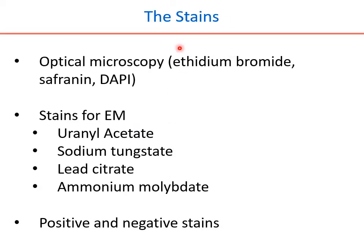Stains have two options: for optical microscopy and electron microscopy. Starting with optical microscopy, shown here are some stains — ethidium bromide, safranine, and DAPI. Ethidium bromide is known for interacting with nucleic acids. Safranine binds to the nucleus in a cell, and DAPI also binds to nucleic acid. These three stains are specifically meant for binding at nucleic acid, and they are fluorescent labels used in fluorescent microscopy.